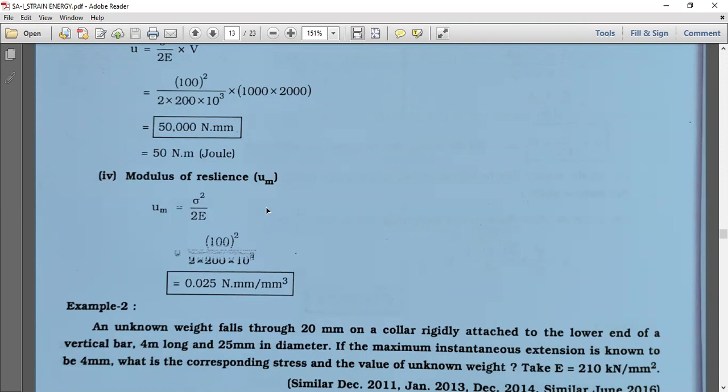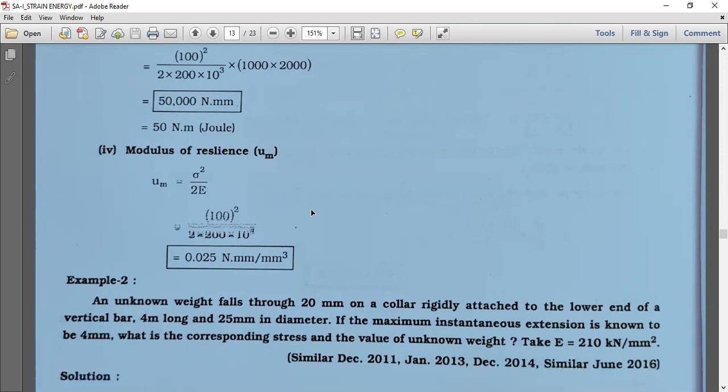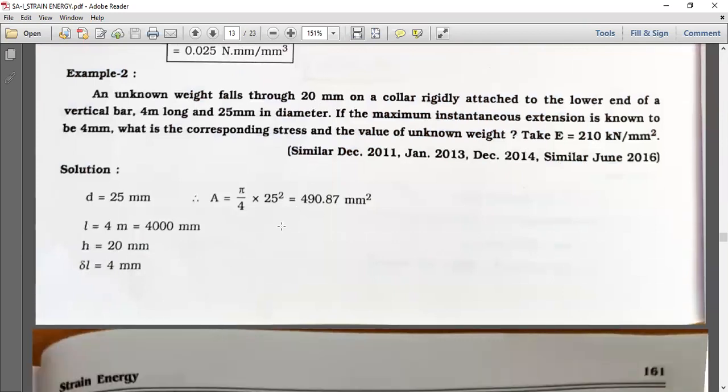Now Example 2. An unknown weight falls through 20 mm on a collar rigidly attached to the lower end of a vertical bar 4 meters long and 25 mm in diameter. If the maximum instantaneous extension is known to be 4 mm, what is the corresponding stress and the value of unknown weight? Take E equals 210 kilonewton per mm square or 210 GPa.